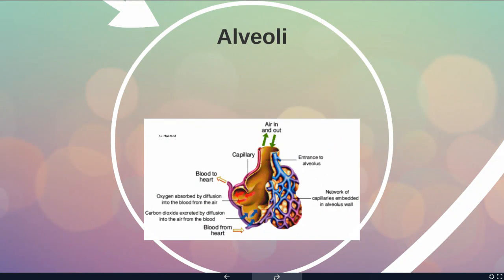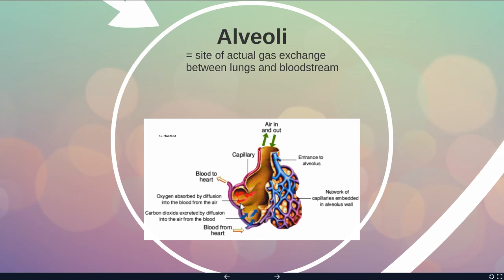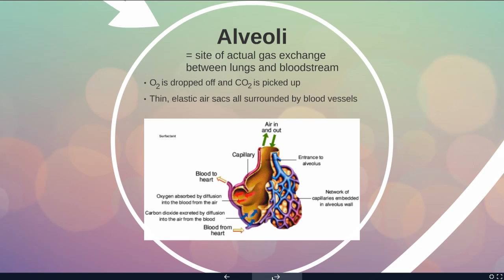Let's talk a little more about the alveoli. This is the actual site of gas exchange between the lungs and the bloodstream. We're going to use basic diffusion to move gases from the respiratory system into the circulatory system — this is where oxygen is dropped off and carbon dioxide is picked up. The alveoli are thin air sacs completely surrounded by blood vessels — also called alveoli in the British pronunciation.